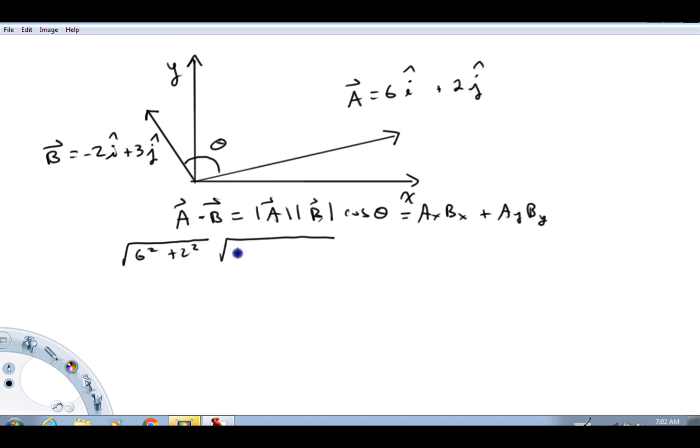Now the minus sign, by time you square, it just goes away anyway, so I'm going to go ahead and put just 2² + 3², so there's magnitude of B, times cosine theta, where theta is the angle between them.